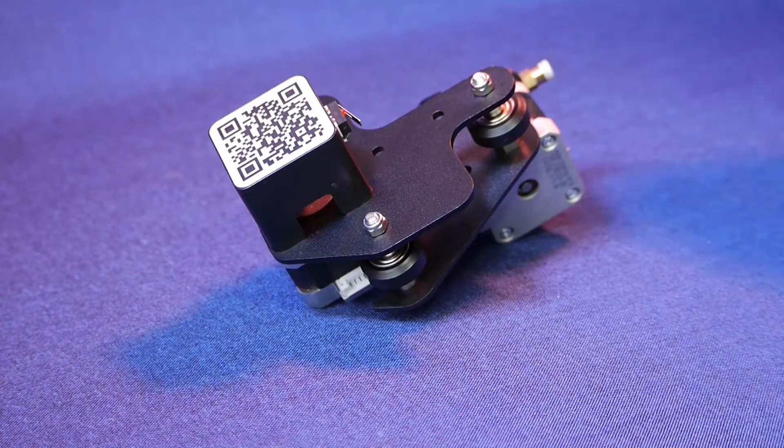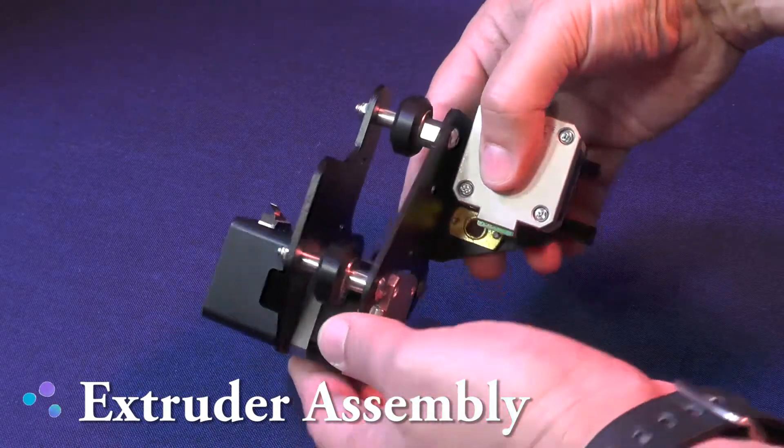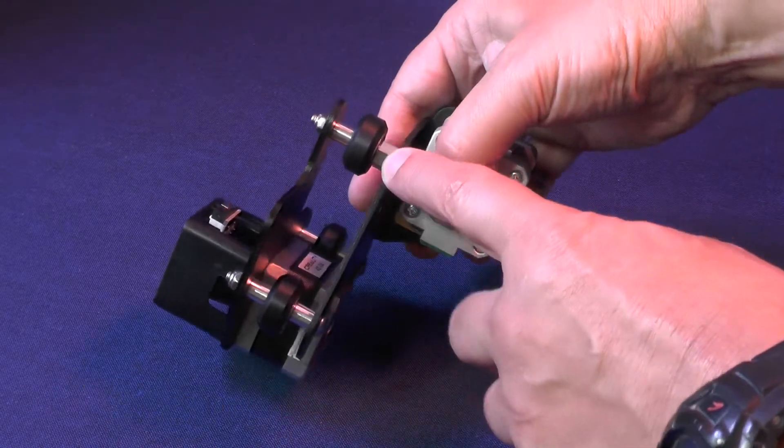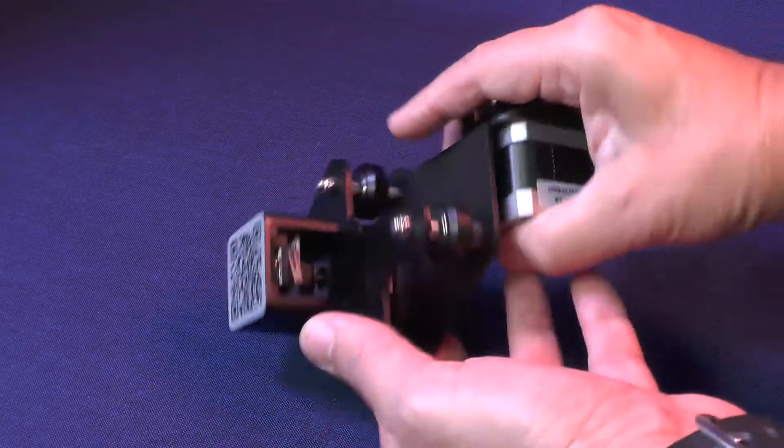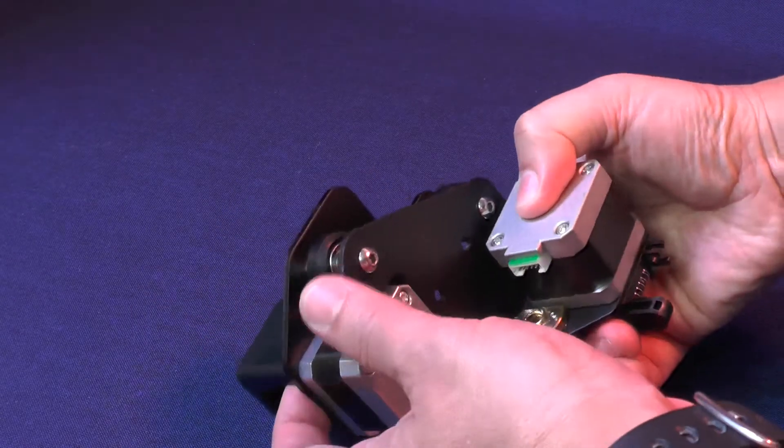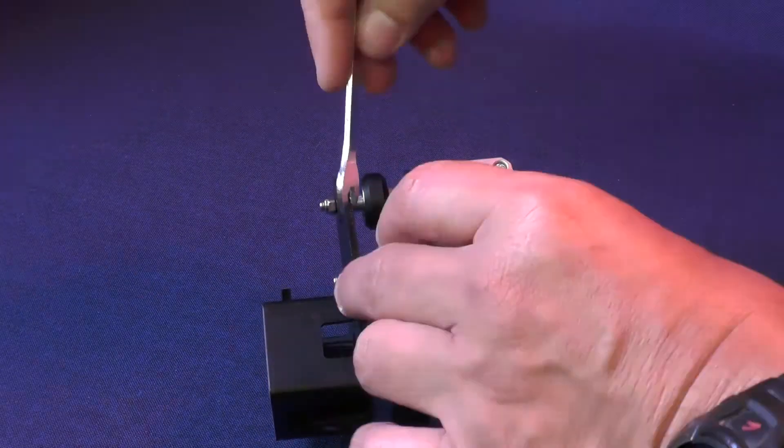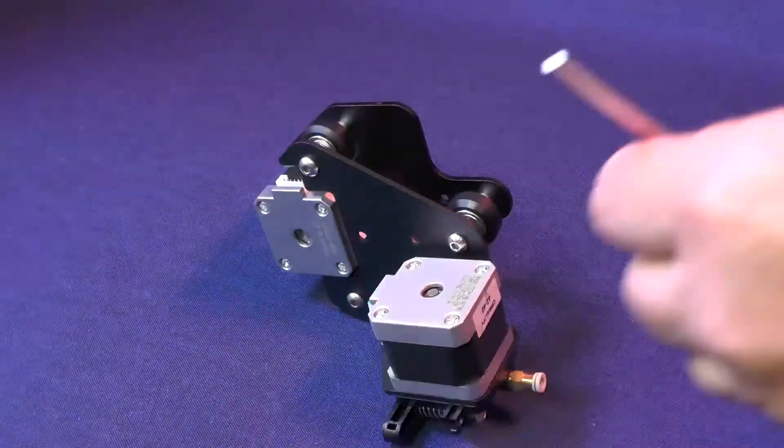Next, we are going to work on the extruder assembly. Here is the wheel with the eccentric nut. And, as you know, this wheel always goes opposite the other two wheels that don't have eccentric nuts. And, as we did before, we are going to tighten the screws for the wheels that don't have eccentric nuts.